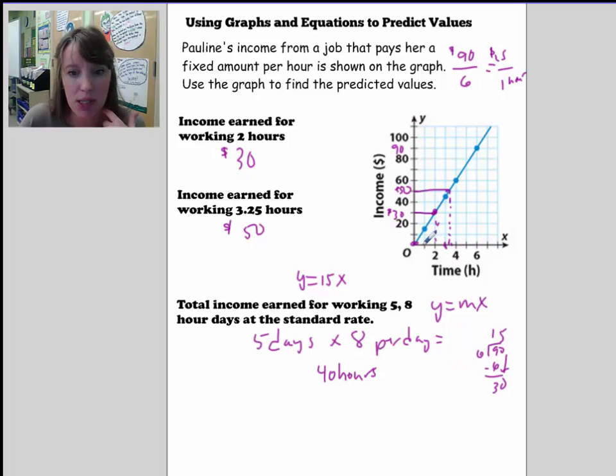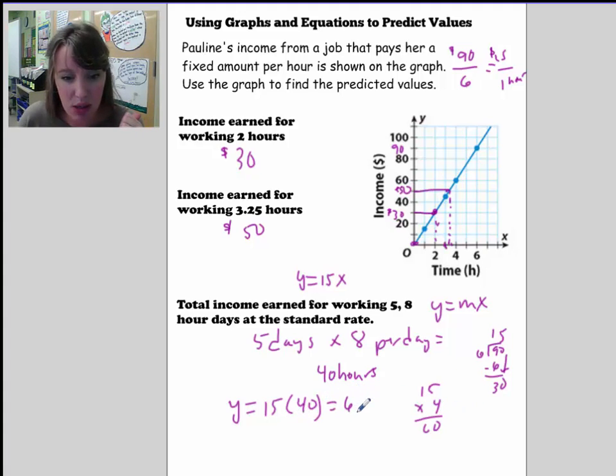So if we use the equation, I could try to figure out what 40 hours, how much she would make in 40 hours, but it doesn't go that far. I could figure out how much she makes in 8 hours, but our line doesn't really help us that much. So it's a good thing that I calculated the equation because this way, it's a lot easier for me to figure this out. So we go, y is equal to 15 times 40. So we just take 15 times 4 is going to be 60. So 15 times 40 is going to get you 600.